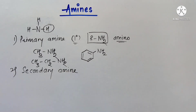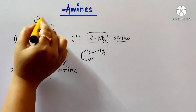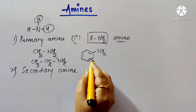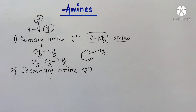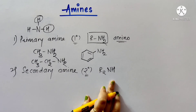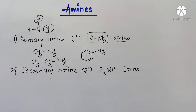The second type is secondary amine. In secondary amines, two hydrogen atoms of ammonia are replaced by two same or different alkyl or aryl groups. These are denoted as 2° amines. The functional group is R₂NH, and this is also called the amino group.